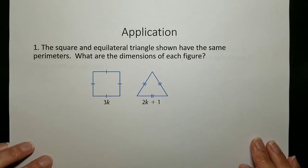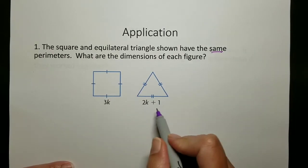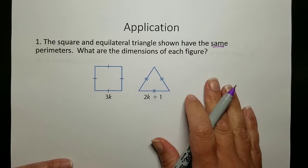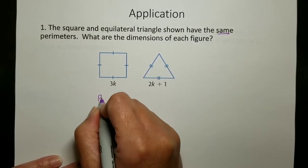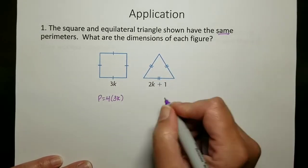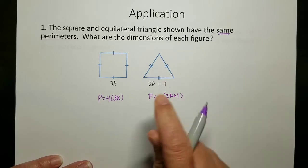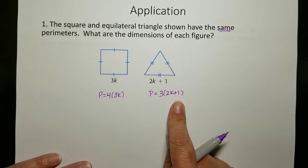The next example we have an application type question. The square has a side length of 3k and the equilateral triangle has a side length of 2k plus 1, and it says that they have the same perimeter. So the perimeter of the square and the perimeter of the triangle are going to be equal. We know that the perimeter of the square is 4 times 3k and the perimeter of the triangle is 3 times 2k plus 1. That's going to be my equation.